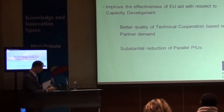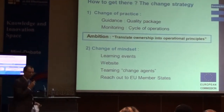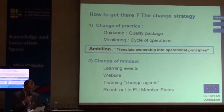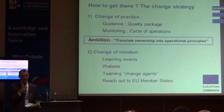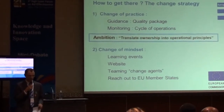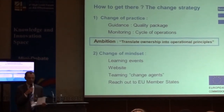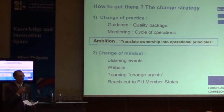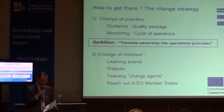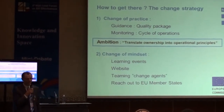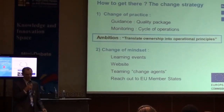How to get there? What was the change strategy? First of all, we had to change the practice. Guidance was drafted with a set of quality criteria such as ownership, harmonization, etc. And these quality criteria had to be monitored. The ambition was to translate ownership into operational practice. However, producing good guidance is not enough, and when guidance is approved, the normal bureaucrat has the feeling of the job done.